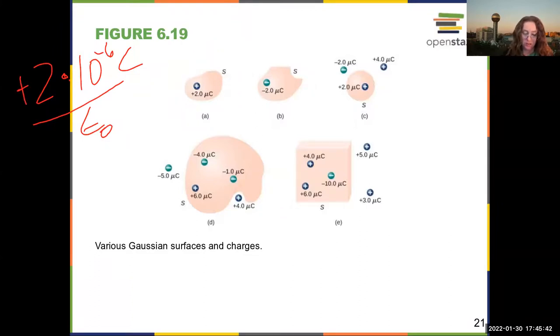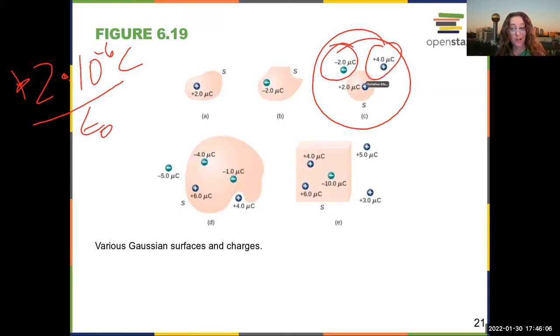We move on to the next one, and it is negative 2 microcoulombs divided by epsilon naught. And the next one. The only thing enclosed is the positive 2 microcoulombs, so our flux is positive 2 microcoulombs. This charge and that charge, they don't matter because they are not enclosed in the surface.